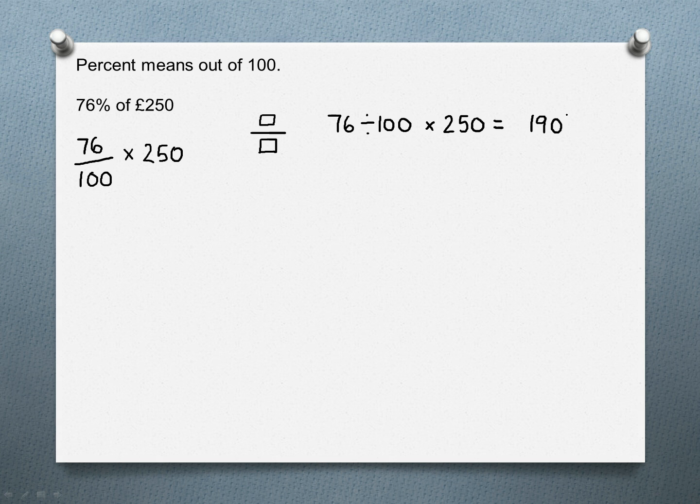When you're doing questions like this, you've got to always refer back to what you were asked originally. It was talking about pounds, so make sure you include a pound sign with your answer. And that's your answer. You're done. To check, 76% is quite close to 75%, that's about three quarters, so £190 seems like a reasonable answer for three quarters of £250.